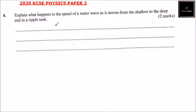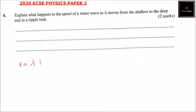This is question number four. Explain what happens to the speed of a water wave as it moves from the shallow to the deep end of the ripple tank. As the water moves from shallow to deep, the wavelength increases. The velocity is defined as the wavelength multiplied by the frequency, so if the wavelength increases, then velocity will increase because velocity is directly proportional to the wavelength.